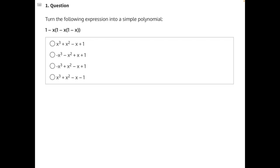Turn the following expression into a simple polynomial. Let's start with this innermost set of parentheses. We can't combine any of the terms in the set of parentheses because they're not like terms. Constants and variables can't be combined. So we need to distribute this negative x into the parentheses.